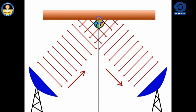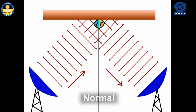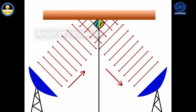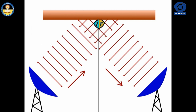The point of incidence and the point of reflection are the same point on the reflecting surface. A perpendicular drawn on the point of incidence is called the normal. Similar to light wave, the angle which the incident sound wave makes with the normal is called the angle of incidence, and the angle which the reflected sound wave makes with the normal is called the angle of reflection.